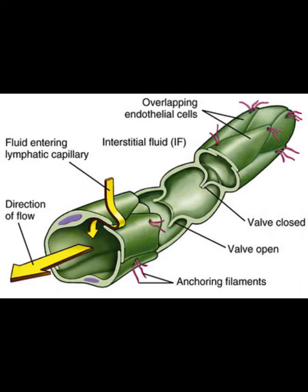The lymphatic capillary is larger in diameter than blood capillaries. The walls of the lymph capillaries are attached to surrounding tissue with anchoring filaments. The walls of these capillaries overlap, creating a flap — a gated entryway for interstitial fluid to come in. Fluid enters like a trap door and cannot get back out.